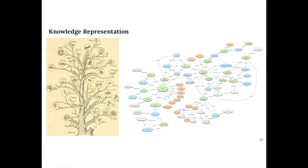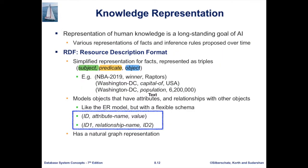In the previous examples, JSON and XML can naturally be viewed as trees. However, as information grew more complex over time, the tree representation is not enough to model current information. A more general representation is a graph, where there is no restriction on connections that form a cycle. As mentioned, the representation of human knowledge is a long-standing goal of artificial intelligence, and several representations have been proposed over time.